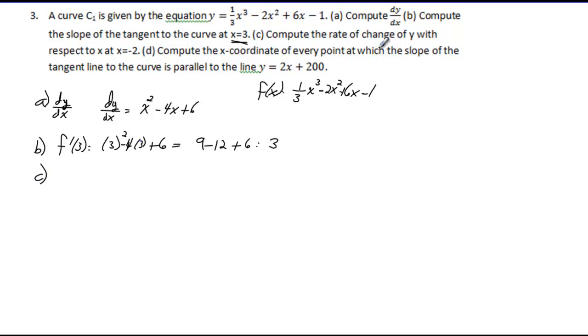Part C: compute the rate of change of y with respect to x at x equals negative 2. Notice B and C are asking for the exact same thing in different ways. Finding the slope of the tangent to the curve is asking for the derivative—finding the rate of change is another way of asking for the derivative.